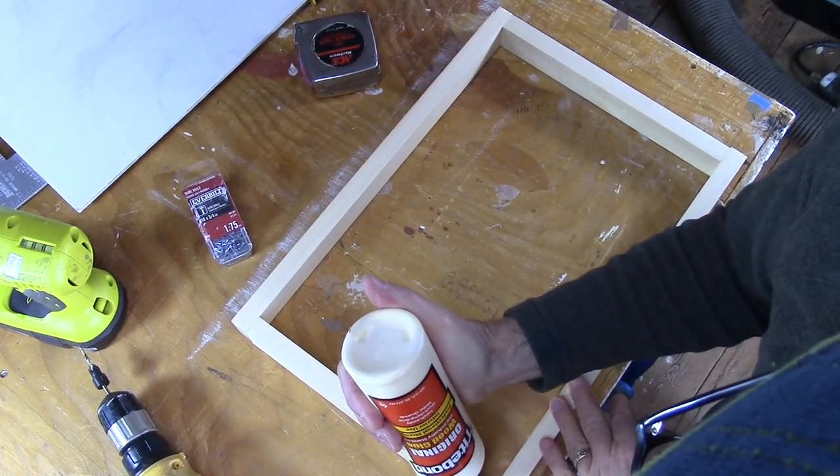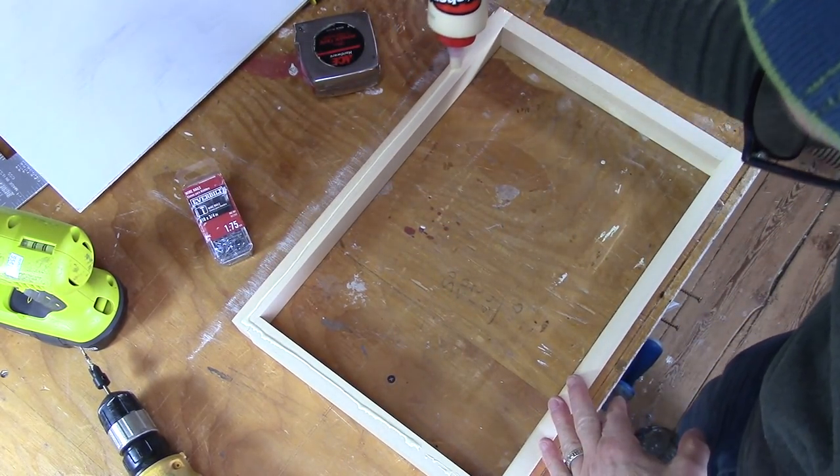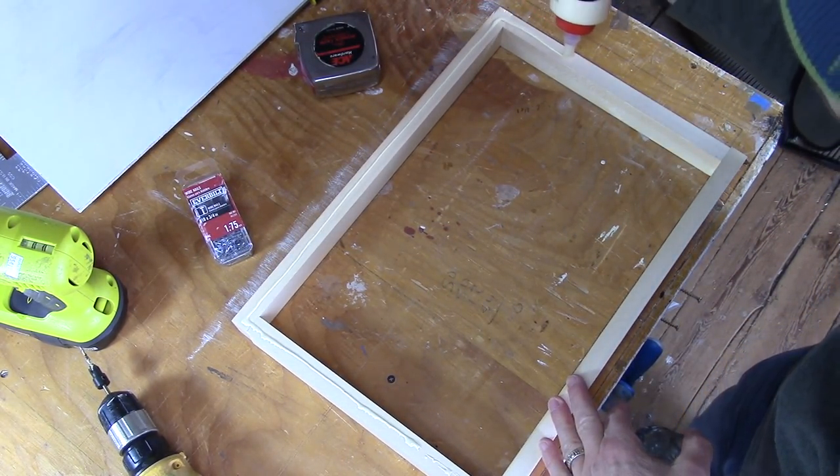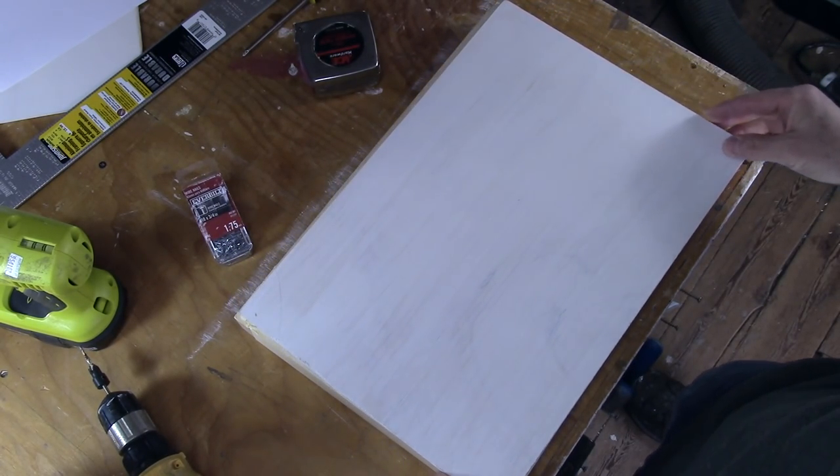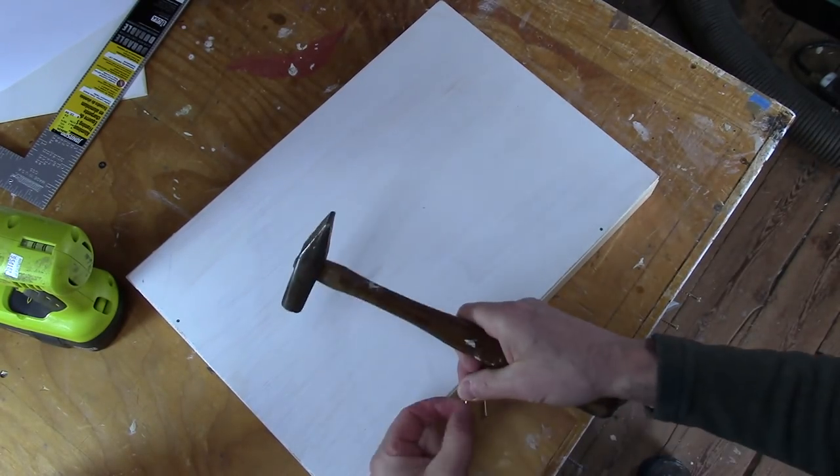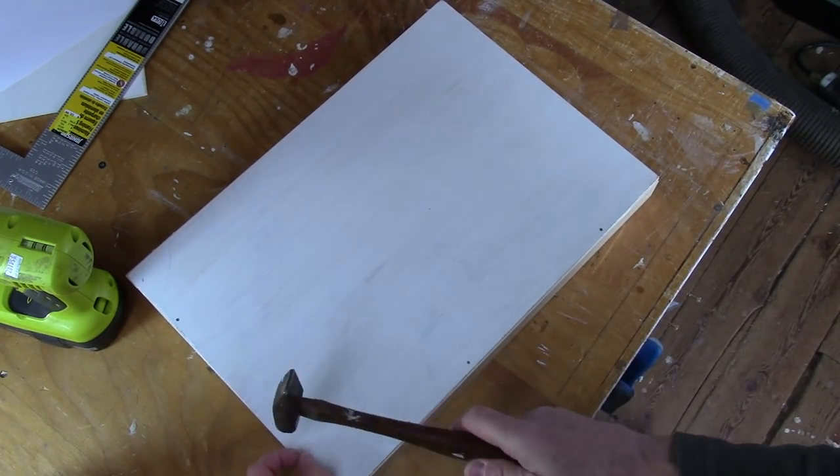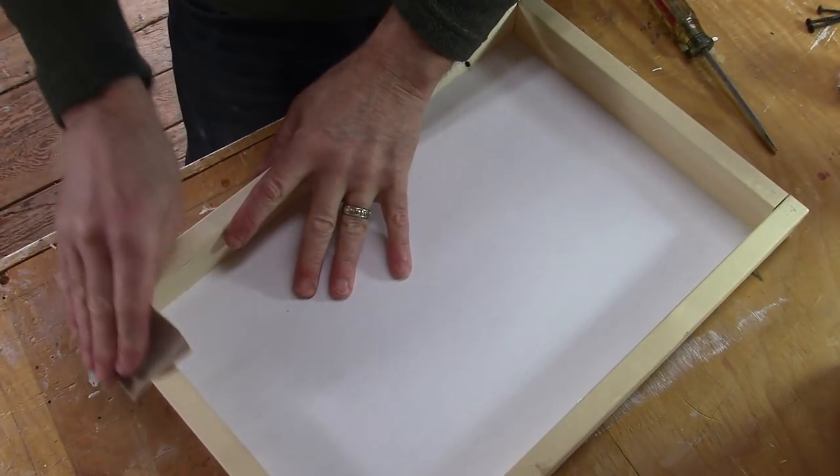Then with a thin bead of glue around the edge of the bottom, you can attach the bottom with three-quarter inch brads. Give everything a quick sand.